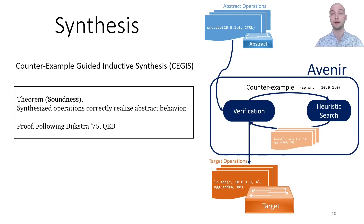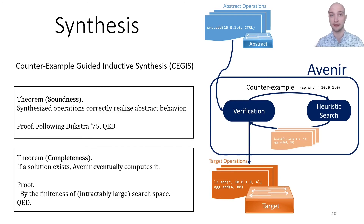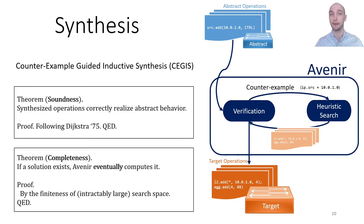We prove two correctness theorems about this algorithm. First, we prove soundness, which says that if we compute a solution, it correctly realizes the abstract behavior, following classic results by Dijkstra from 1975. We also prove completeness, which says that if a solution exists, Avenir will eventually compute it. The proof here follows by the finiteness of the search space of all controller operations, which is really far too large to exhaustively explore. So we need to come up with good heuristics and optimizations to make Avenir scale in the common case.